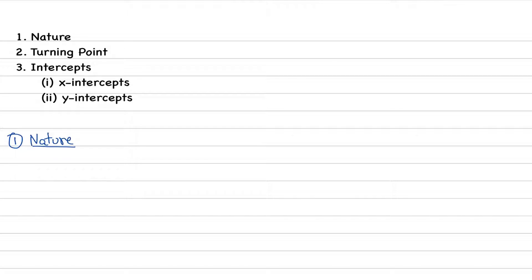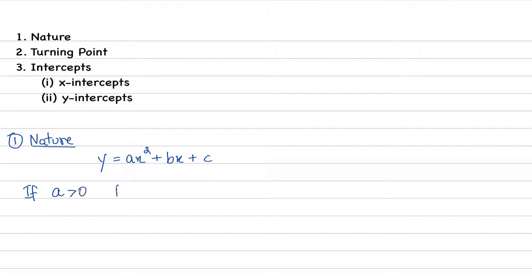Finding out the nature is the easiest of the three things. Nature is basically determined by looking at the coefficient of x squared. So if you have y equals ax squared plus bx plus c, the coefficient of x squared is a. Now a can be either positive or negative — there is no third possibility. If a is zero, then it is not a quadratic curve anymore; it will be a straight line. So there are two possibilities: number one is if a is greater than zero, or you can say if a is positive.